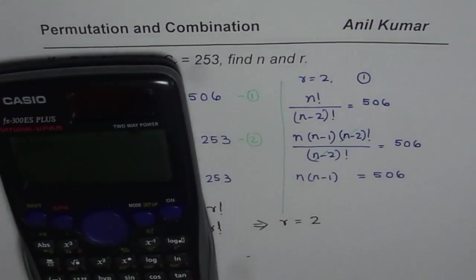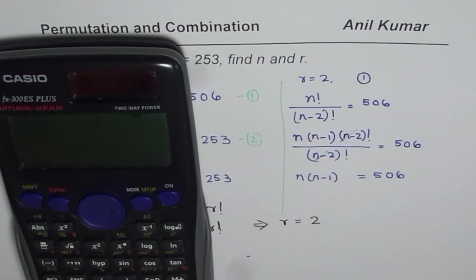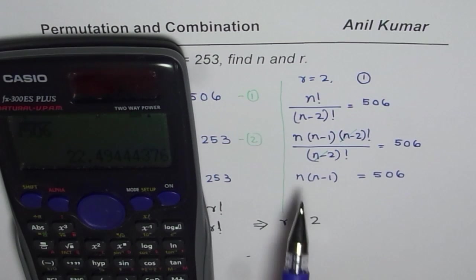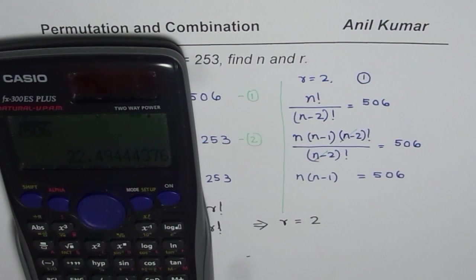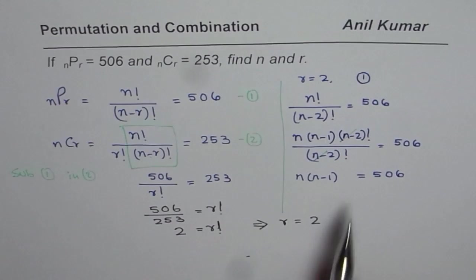Here is a very unique method. We can take the square root of 506, which gives approximately 22.5, suggesting we try nearby consecutive integers. And indeed, 23 times 22 equals 506. So we get the value of N as 23. That is one way of solving it.